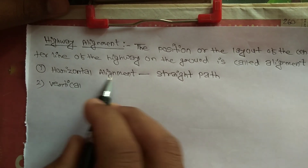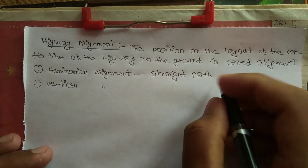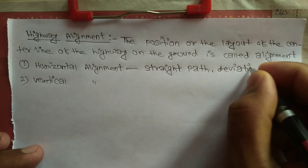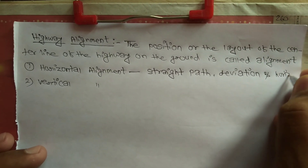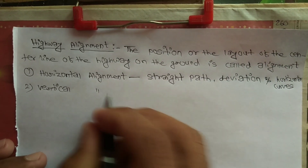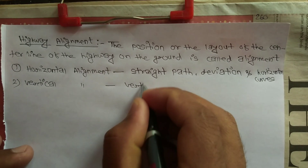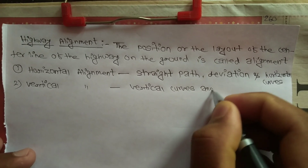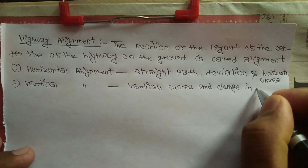Horizontal alignment includes a straight path, deviation, and horizontal curves. And vertical alignment includes vertical curves, change in alignment, and gradient.